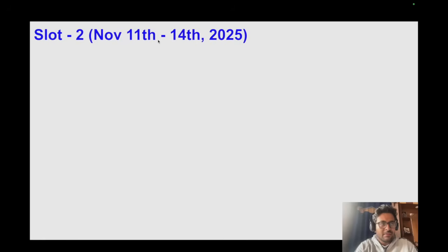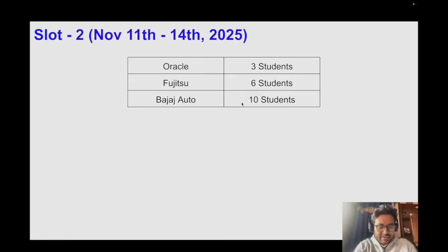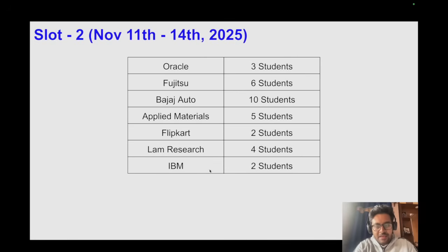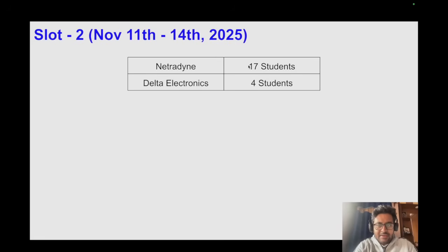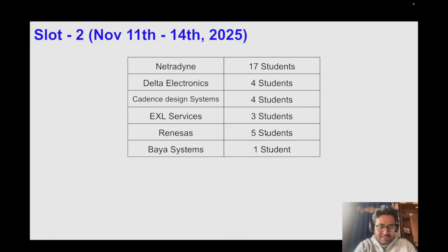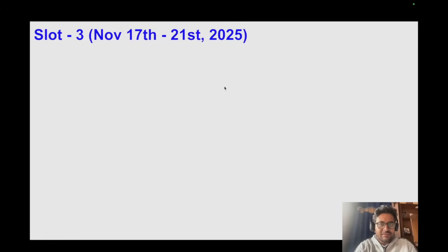Slot 2 ran from November 11th to November 14th. Companies and students placed: Oracle 3, Fujitsu Research 6, Bajaj Auto 10, Applied Materials 5, Flipkart 2, Lam Research 4, IBM 2, Citibank 7, Chevron 7, GE Aerospace 4, Netradyne 17, Delta Electronics 4, Cadence Design Systems 4, EXL Services 3, Renaissance 5, Bias Systems 1, Myntra 2, HPCL 1, and KPMG 1.